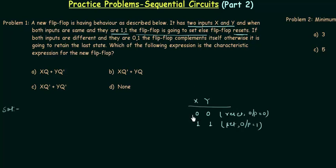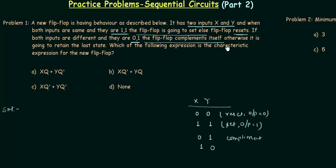For the other two possibilities: when x is 0 and y is 1, the flip-flop complements itself. When x is 1 and y is 0, it retains the last state — that is memory. Now we have to find the characteristic equation for this new flip-flop.